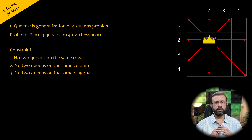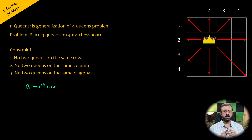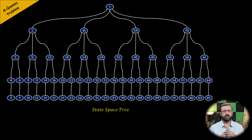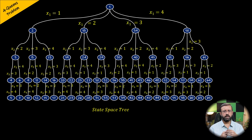Since each queen must be on a different row, we can assume queen i is to be placed on row i. The solution space is represented as a state space tree, also known as a permutation tree. The edges are labeled by possible values of xi. Therefore, for 4 queens, the solution space consists of 4 factorial, which is 24, and will have 24 leaf nodes in the permutation tree. The solution space is defined by all the paths from the root node to the leaf node.